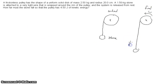The object, the stone, is now moving down at speed V. They're asking how far must the stone fall so that the pulley has 4.5 joules of kinetic energy.